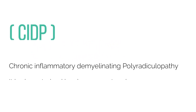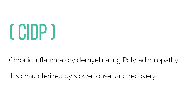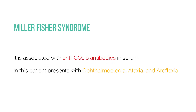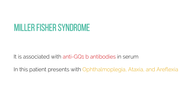Variants of GBS: Chronic Inflammatory Demyelinating Polyradiculopathy (CIDP) is characterized by slower onset and recovery. Miller Fisher syndrome is associated with anti-GQ1b antibodies in serum and presents with ophthalmoplegia, ataxia, and areflexia.